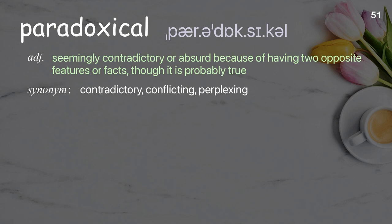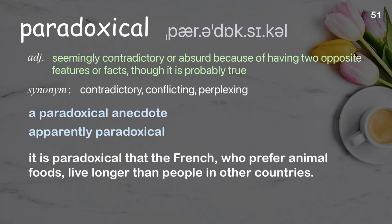Paradoxical: seemingly contradictory or absurd because of having two opposite features or facts, though it is probably true. Examples: a paradoxical anecdote, apparently paradoxical. It is paradoxical that the French, who prefer animal foods, live longer than people in other countries.